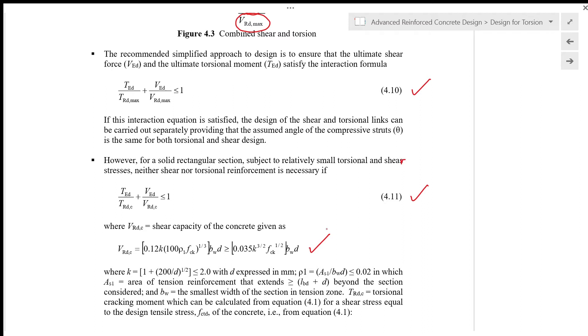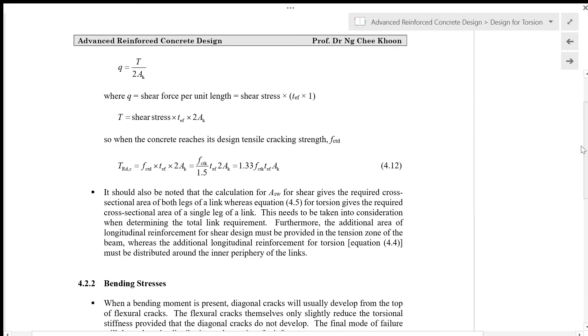TRDC is the torsional cracking moment which can be calculated from equation 4.1 for a shear stress equation to the design tensile stress FCTD of the concrete. From equation 4.1, Q = T/(2AK) where Q is the shear force per unit length, which is the shear flow, equal to the shear stress times the thickness of the hollow section TEF.